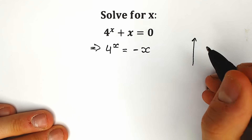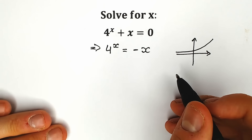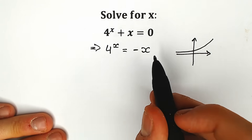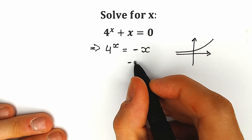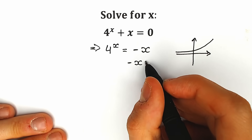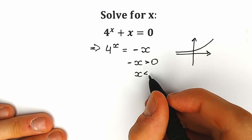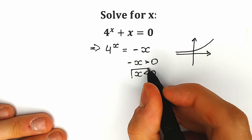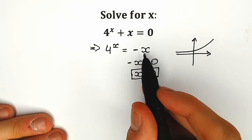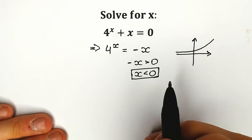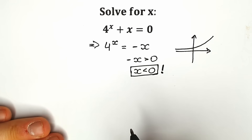Everyone knows that 4 to the x is an exponential function. This function is always positive, so the right side, minus x, also needs to be positive. That means x must be less than zero. When x is negative, minus x gives us a positive value, so everything works out. So x is less than zero.